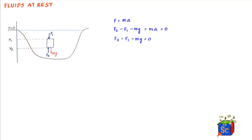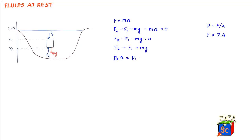From this we get F2 = F1 + mg. Now, pressure is force per unit area, so force equals pressure times area. If the cross-sectional area of the cylinder is A, then F1 = p1·A and F2 = p2·A. So the force acting from the bottom is p2·A and this equals p1·A plus mg.